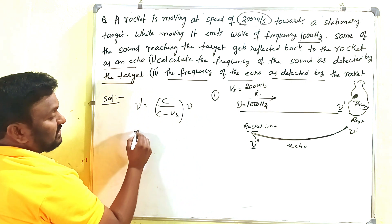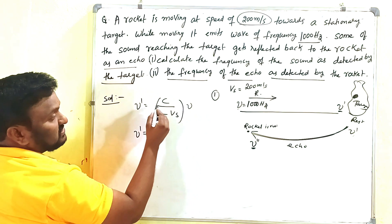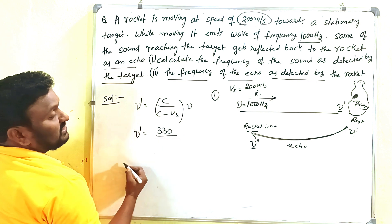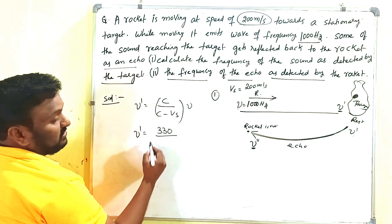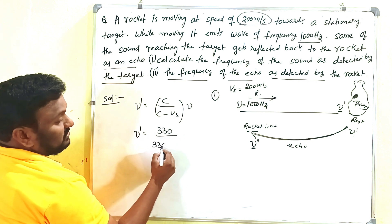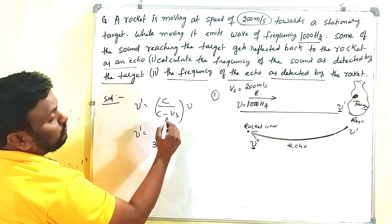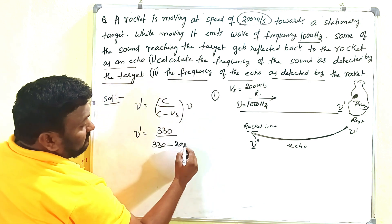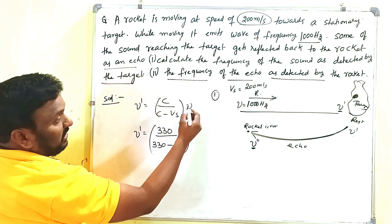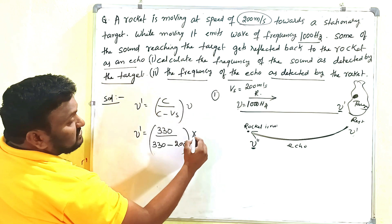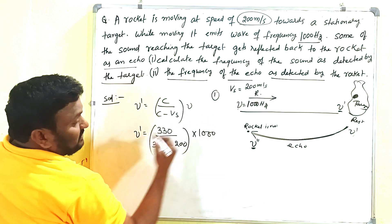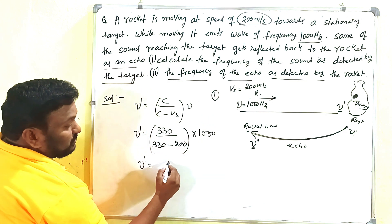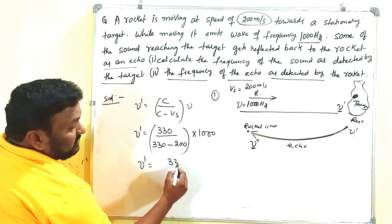What is ν dash? ν dash = c / (c − vs) × ν. That is the formula. Here c is the velocity of sound, which is 330 m/s. So ν dash = 330 / (330 − 200) × 1000, which is 330 / 130 × 1000.